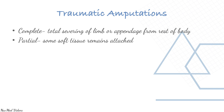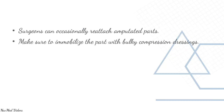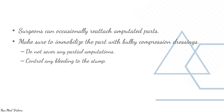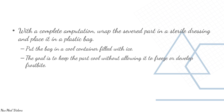Traumatic amputations can be complete — total severing of the limb — or partial, where some soft tissue is still attached. Common areas: arms, ears, feet, fingers, hands, legs, and nose. Surgeons can occasionally reattach amputated parts. Immobilize with bulky compression dressings; do not sever any partial amputations. Control bleeding to the stump; if bleeding cannot be controlled, apply a tourniquet. For a complete amputation, wrap the severed part in a sterile dressing, place in a plastic bag, and put the bag in a cool container with ice — keep it cool without allowing freezing or frostbite.